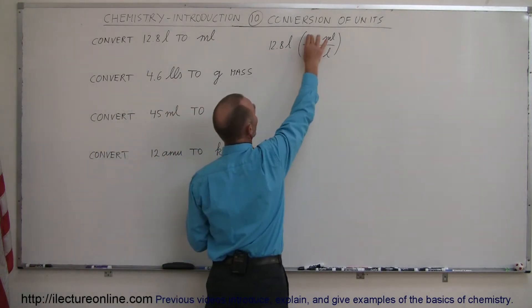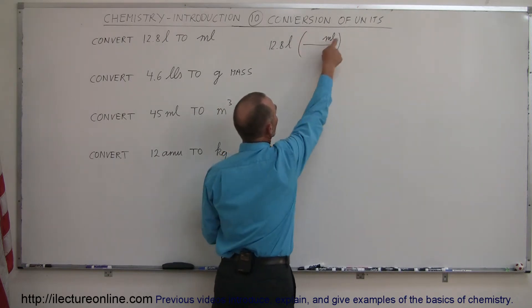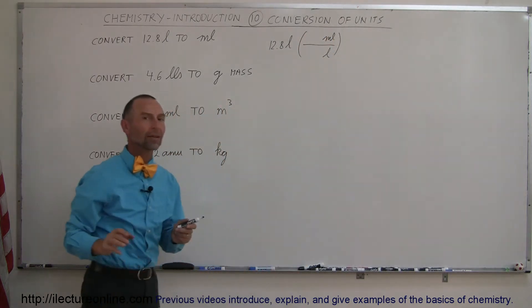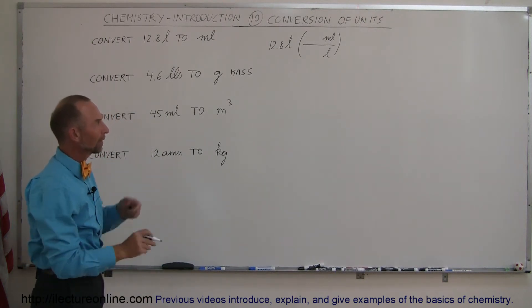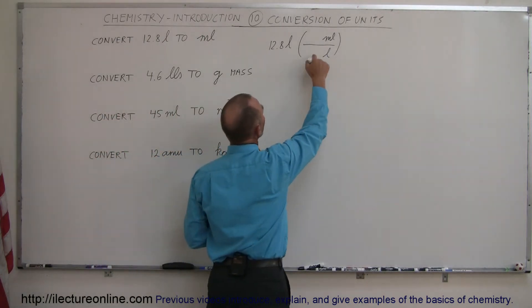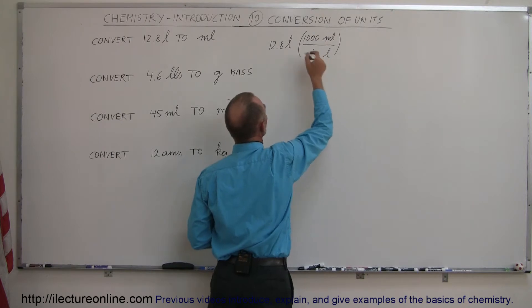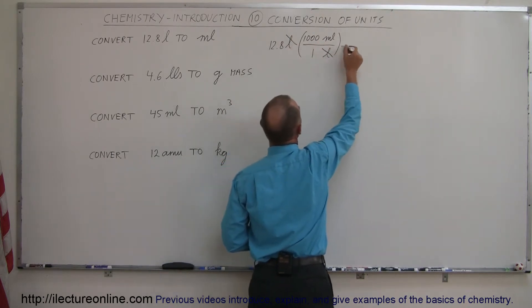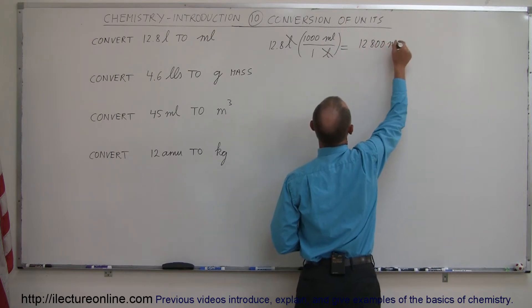When you multiply this times whatever this fraction is, liters will cancel out, and you'll end up with just units of milliliters. The next thing to do is put in the ratio of what that conversion is. We should realize that one liter is equivalent to a thousand milliliters, so there's our conversion. Liters cancel out, and therefore this equals 12,800 milliliters.